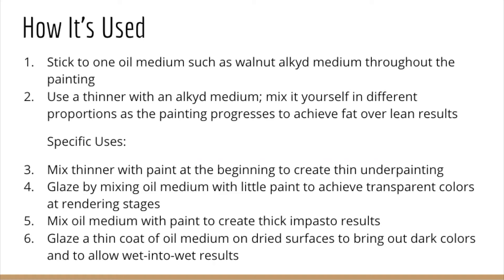As a general rule of thumb, there are two main uses of oil mediums. Some artists will stick to one medium, such as walnut Alkit medium, throughout the painting. While others will mix thinner with Alkit medium in different proportions as the painting progresses to achieve fat over lean results. Specific uses include mixing thinner with paint at the beginning to create a thin underpainting, or glazing by mixing oil medium with a little paint to achieve transparent colors at rendering stages. You can also mix oil medium with paint to create a thick impasto result, or glaze a thin coat of oil medium on dried surfaces to bring out dark colors and to allow wet-into-wet results.